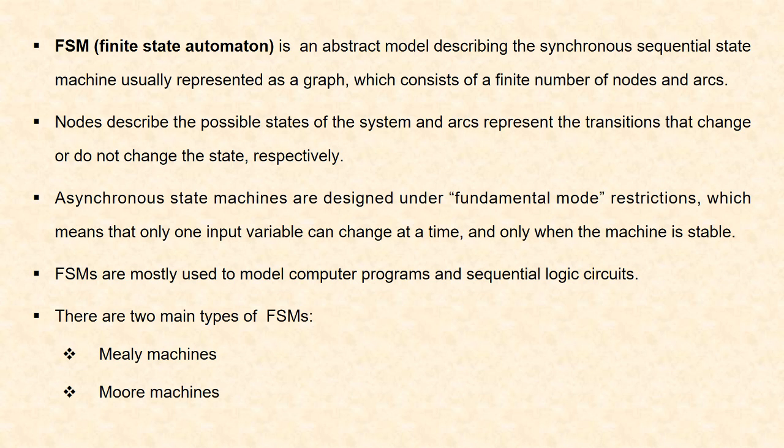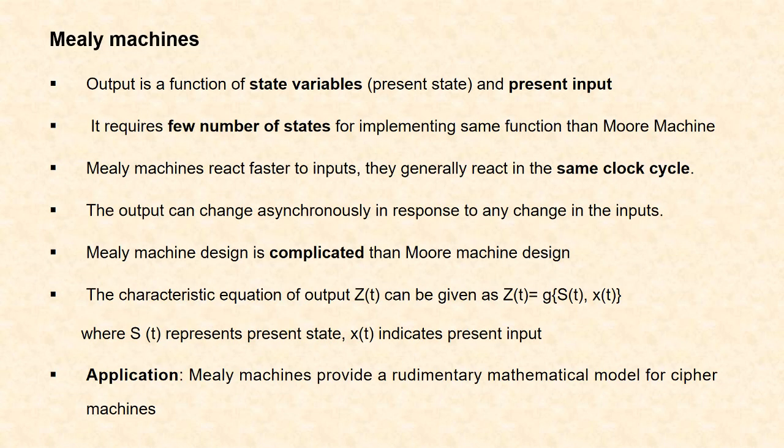There are two main types of finite state machines: Mealy machines and Moore machines. First, we will see about Mealy machines. A Mealy machine is a state machine in which the output depends on the state variables, that is the present state, and also on the present input.